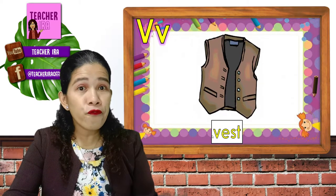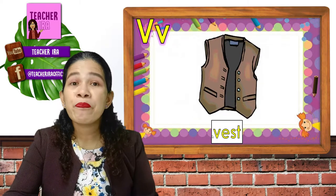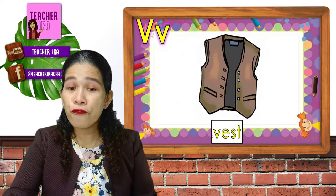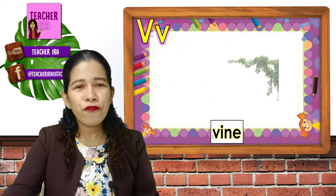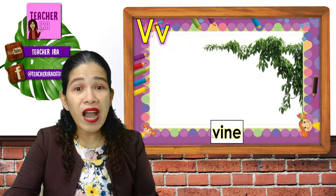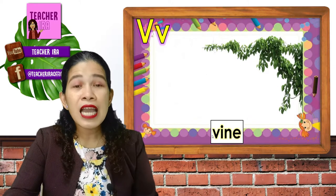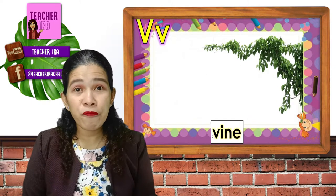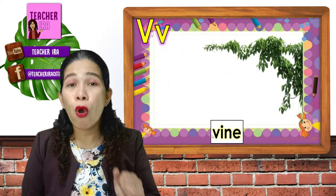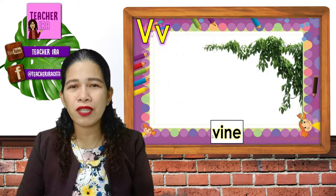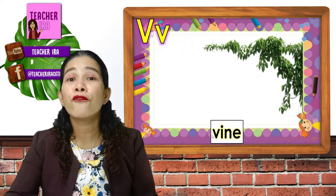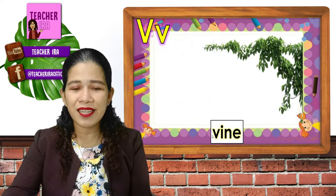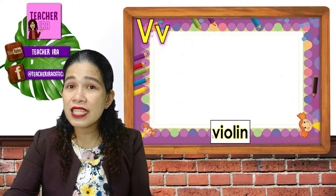Next, V, vest. V, vest. V, vine. V, vine. This is a kind of plant that climbs or crawls. We call it vine.